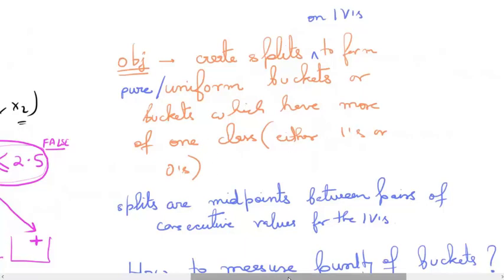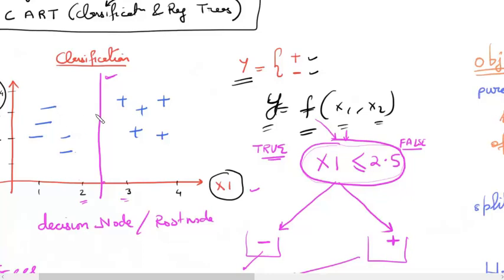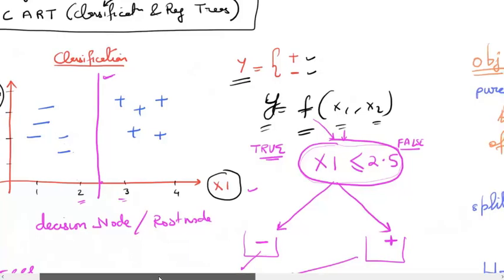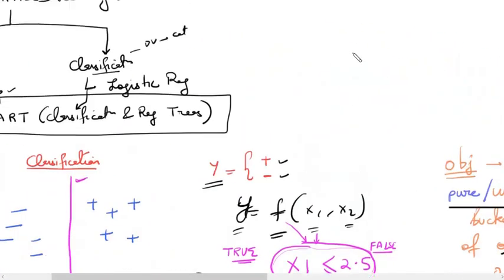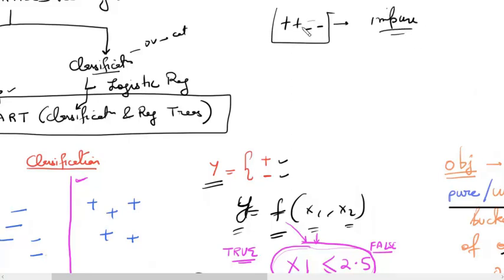The goal is to form pure or homogeneous buckets — buckets which entirely consist of either pluses or minuses. The decision tree may not always succeed, but that is its goal. Consider a bucket with two pluses and two minuses: this is the worst form of impurity because both classes are equal in number — it's 50/50.